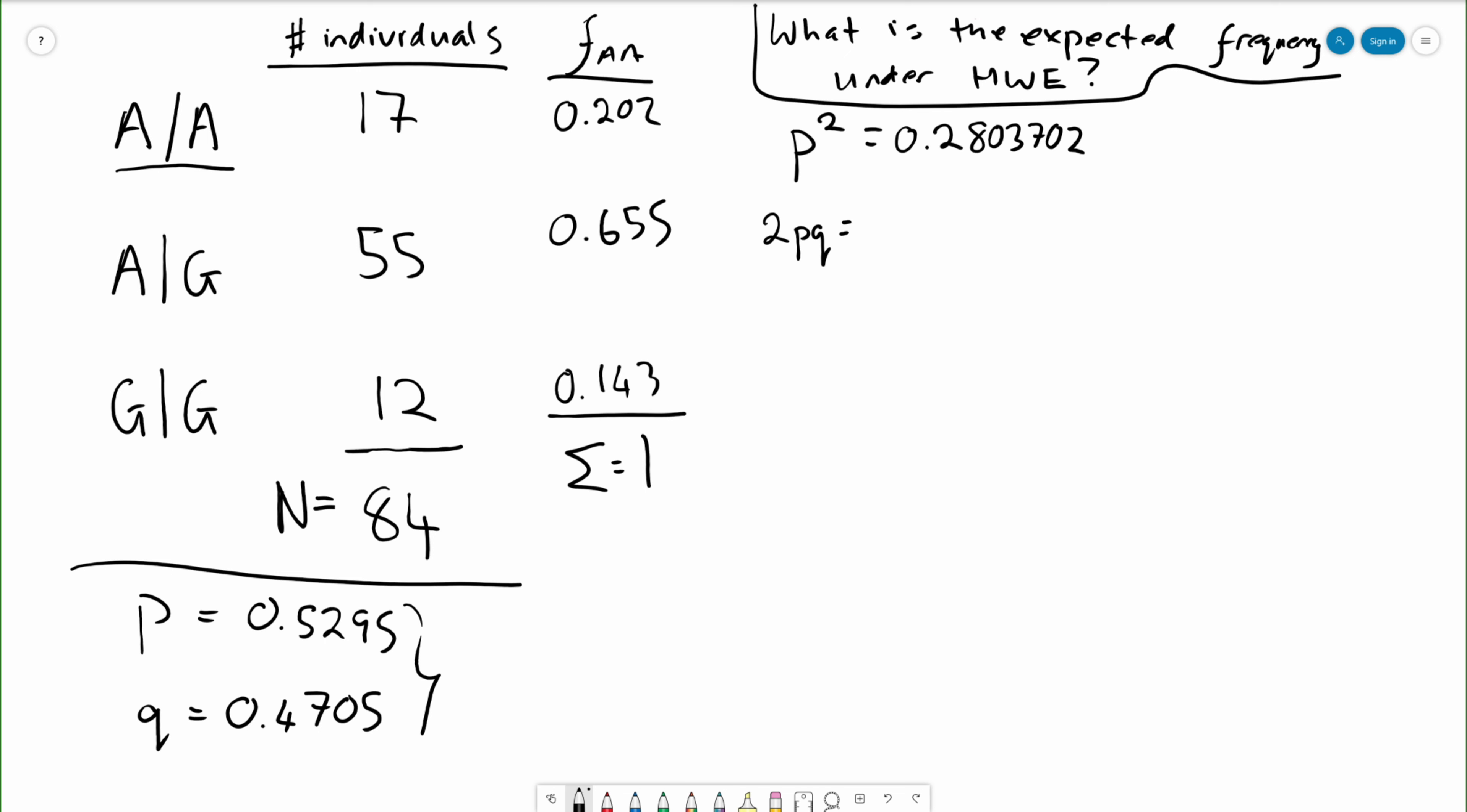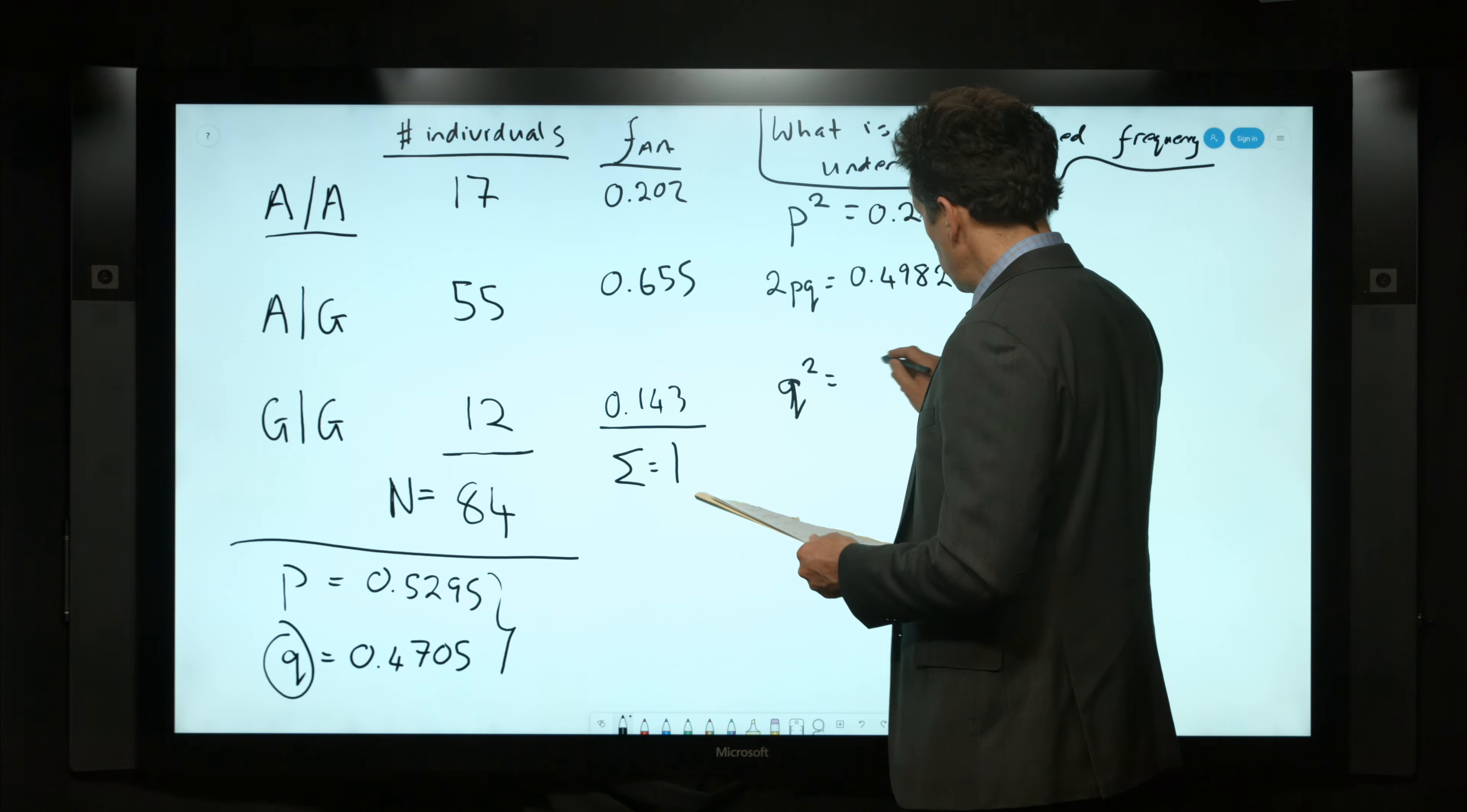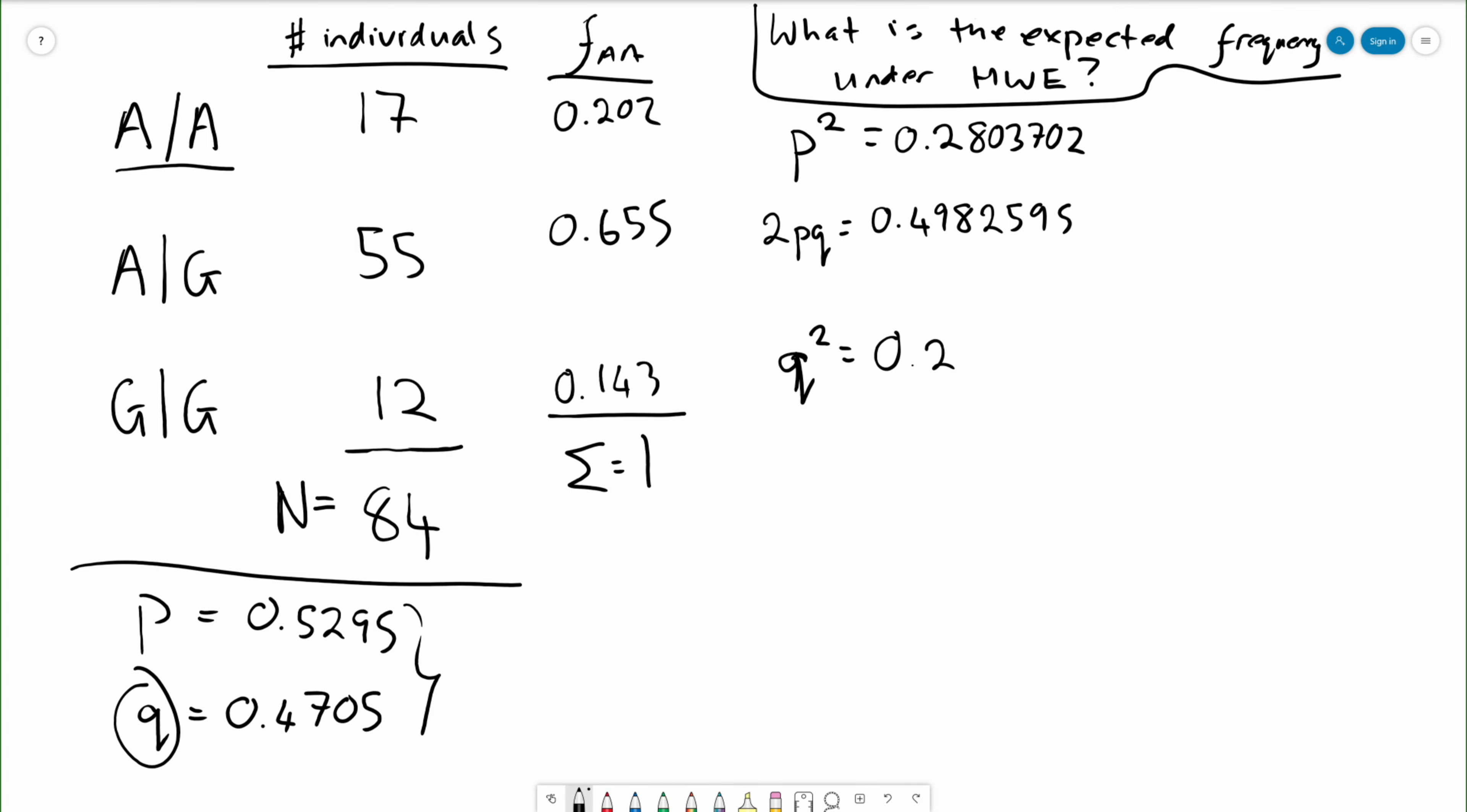And we expect to see the G/G genotype frequency with frequency equal to Q². Q here is 0.4705 squared, and so that is going to be 0.2213702.